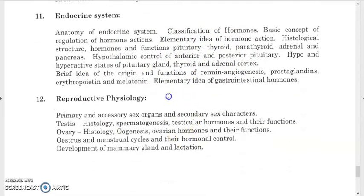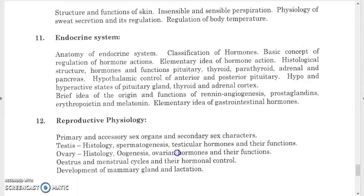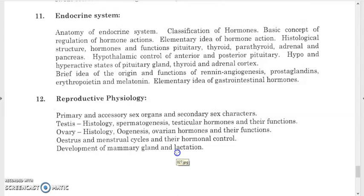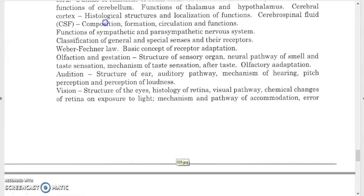For reproductive physiology, study primary and accessory reproductive organs, secondary sex characteristics, testicular histology, spermatogenesis, testicular hormones and their functions, ovary histology, oogenesis, ovarian function, estrus and menstrual cycles with their hormonal control, development of mammary glands, and lactation. This covers the complete syllabus for the recruitment post of assistant teacher class 9 and 10 in biological sciences.